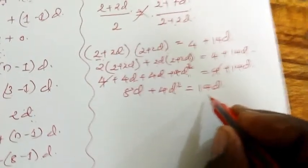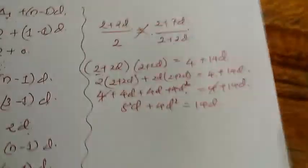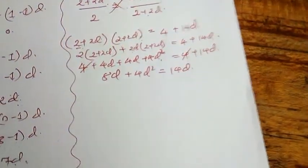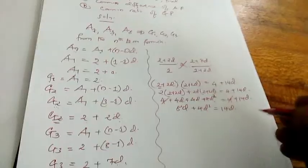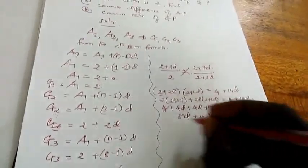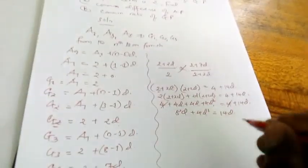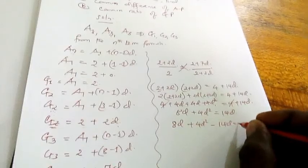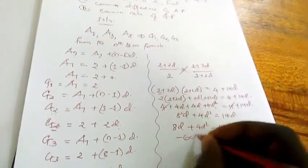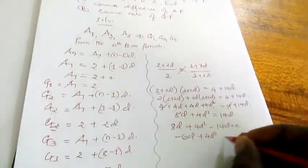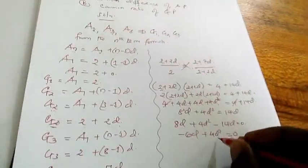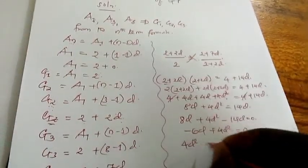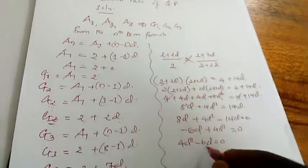Then we open the brackets. Once you open the brackets, you get 4 plus 4D plus 4D plus 4D squared. Adding these, you get 8D plus 4D squared equals 4 plus 14D. After that, what will we do next? When you reach there, what will you do? We bring this side here to form a quadratic.